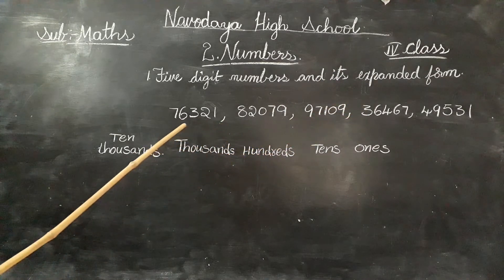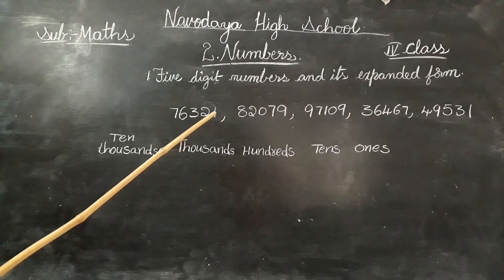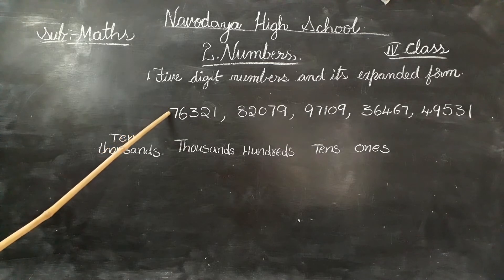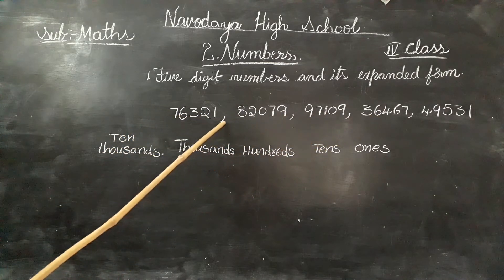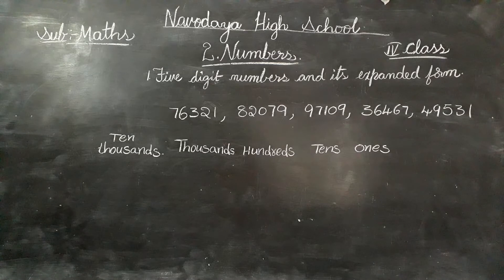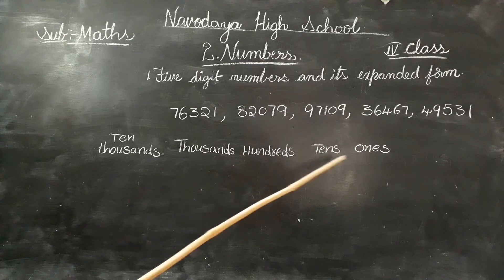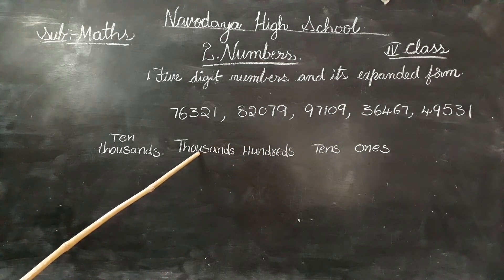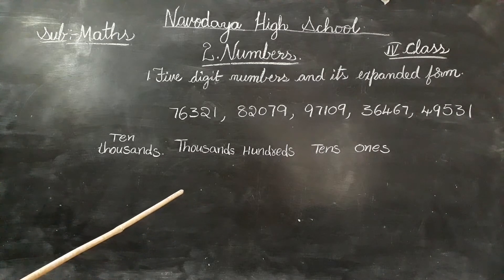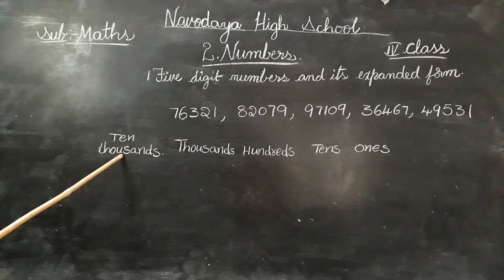Look at these numbers, children. Are all these five digit numbers? Yes. Ones, tens, hundreds, thousands — and the new place is ten thousands. If you observe the numbers closely, you will notice that all the given numbers have five digits. We already know how to write the place values chart for four digit numbers. Every five digit number has a new place beside the thousands place, that is the ten thousands place.